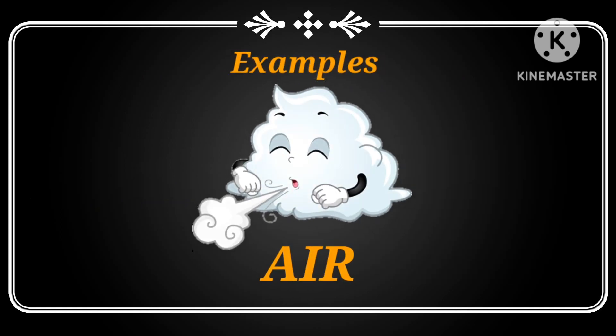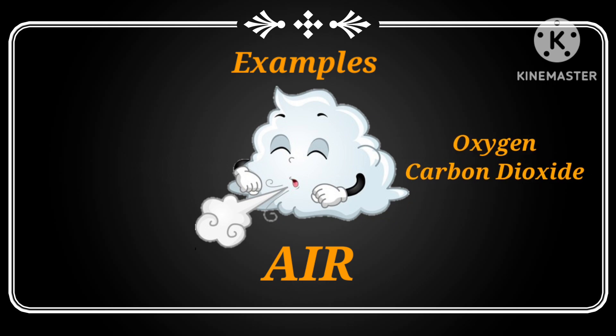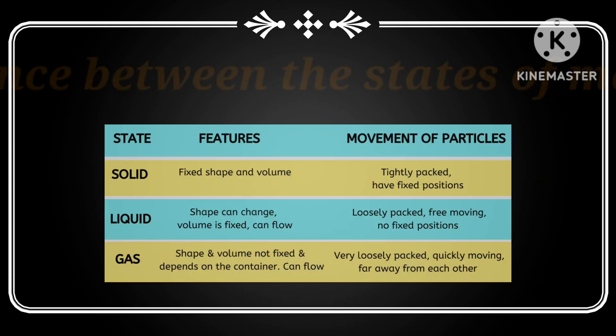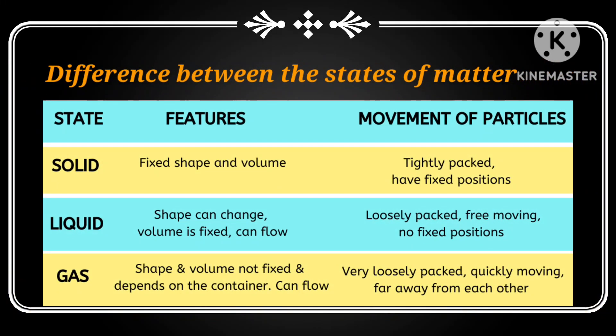Air is made up of gases. It contains oxygen and carbon dioxide. This table helps to differentiate between the states of matter.